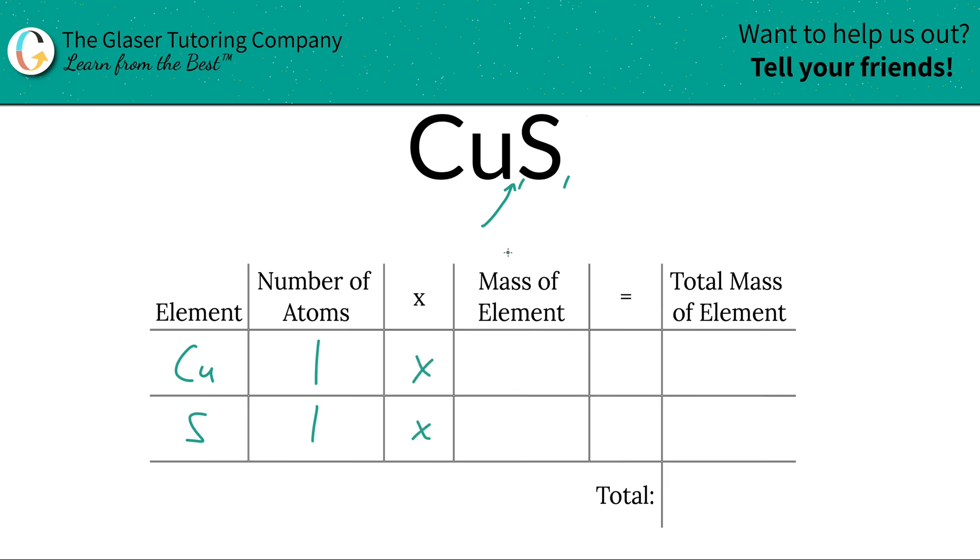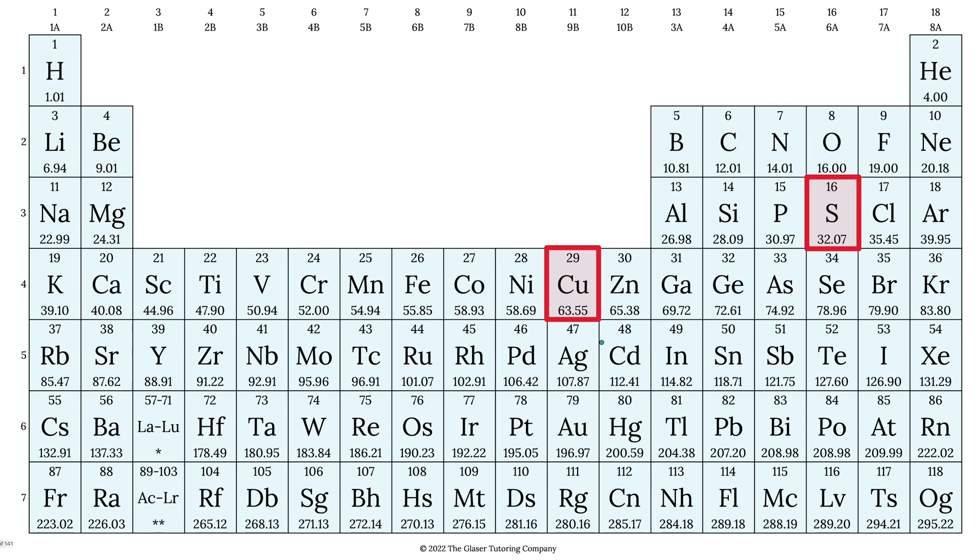And then we're going to take those number of atoms and multiply it by the mass of each particular element. These masses are found on the periodic table.